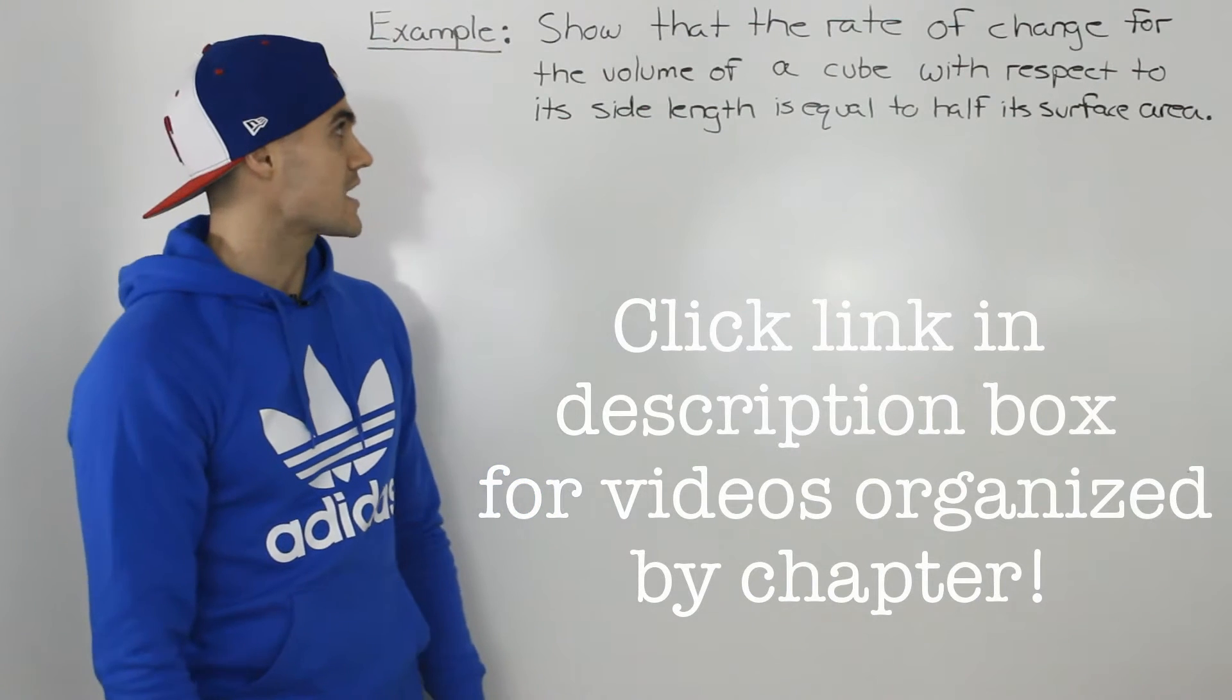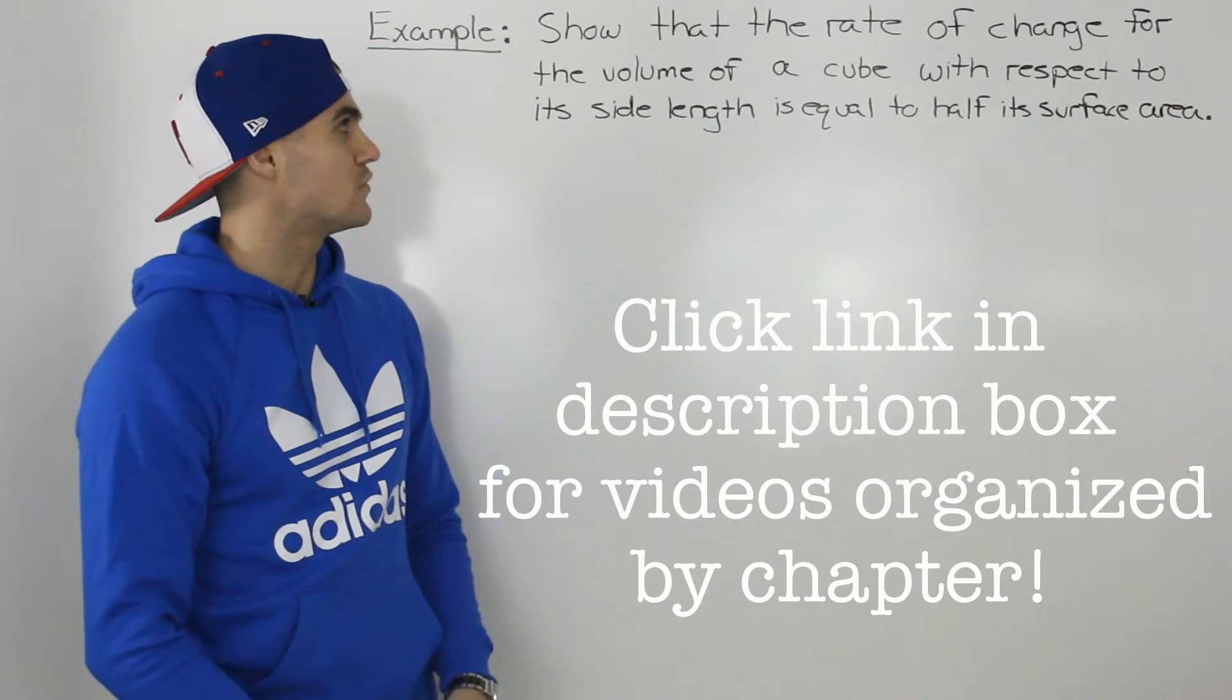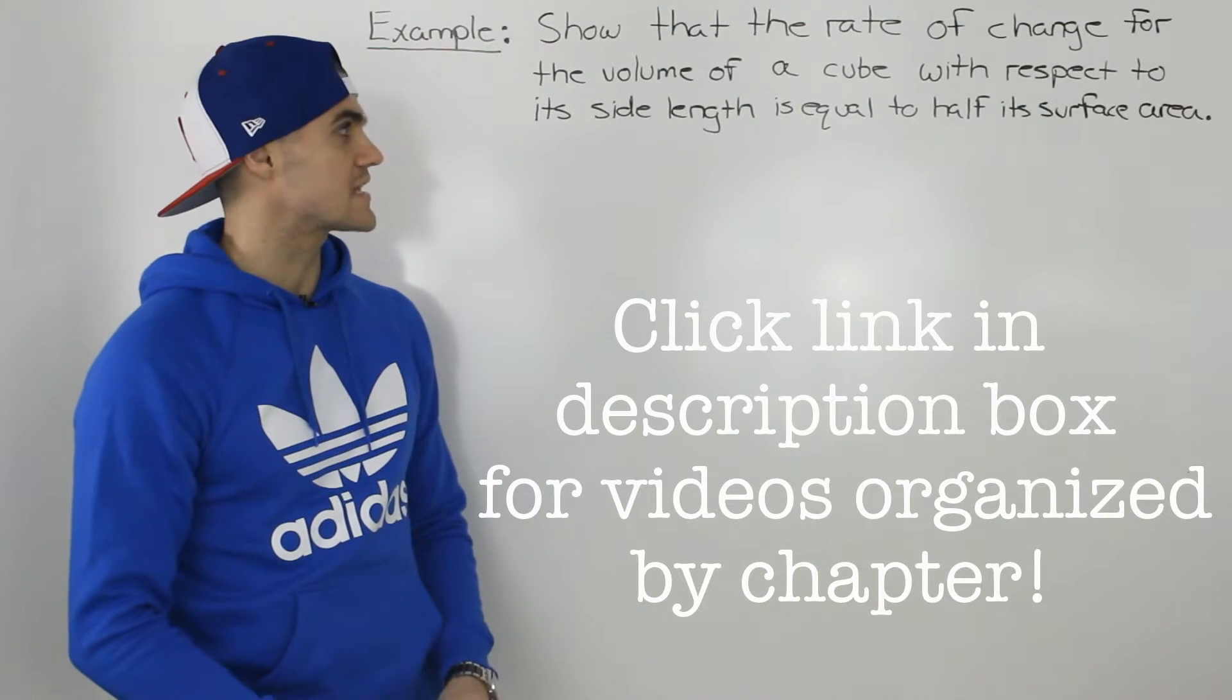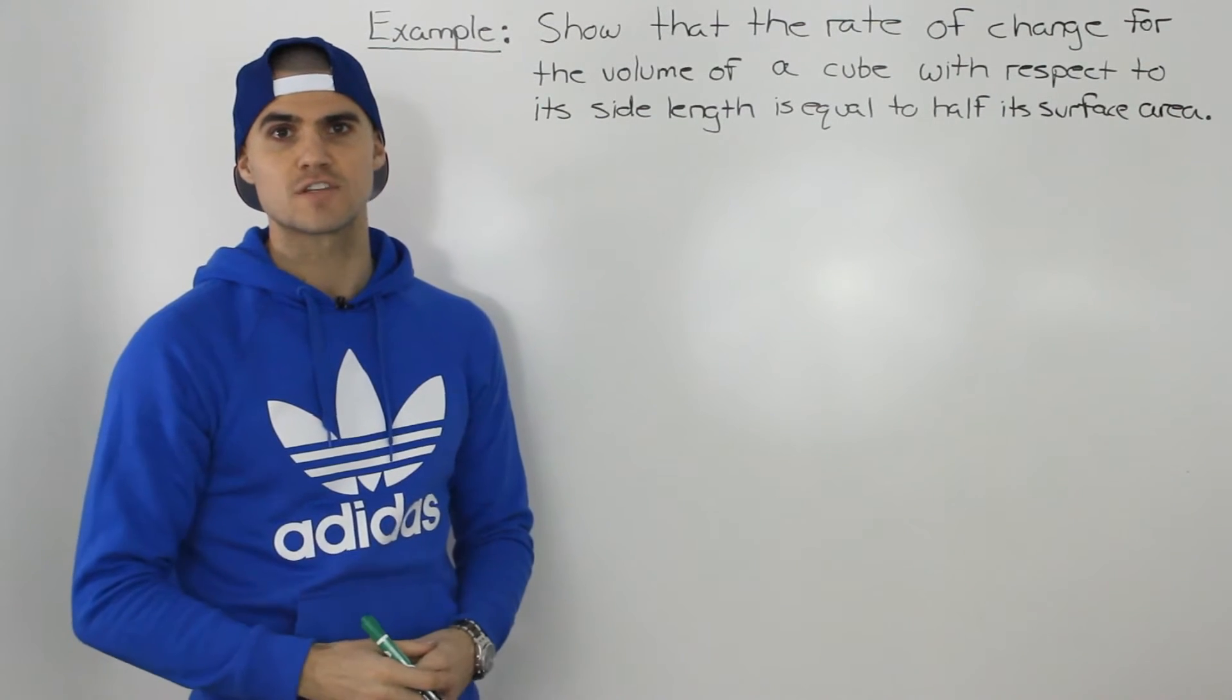What's up everybody? Moving on to the next example. Show that the rate of change for the volume of a cube with respect to its side length is equal to half its surface area.